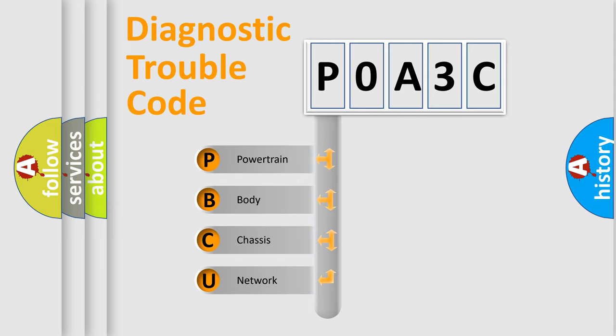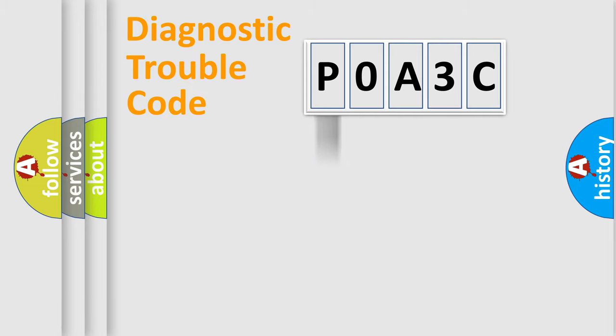We divide the electric system of automobile into four basic units: Powertrain, Body, Chassis, and Network.